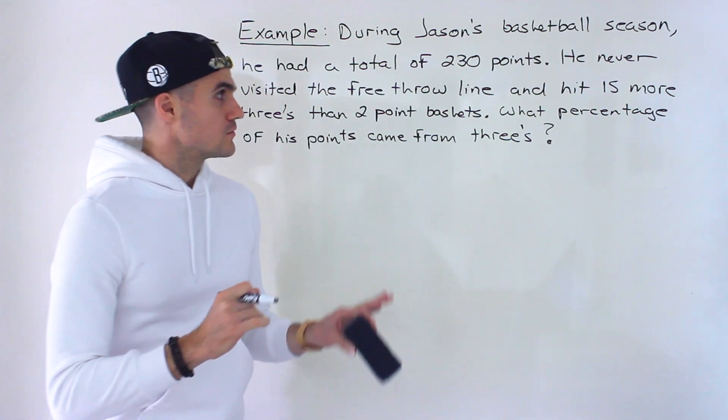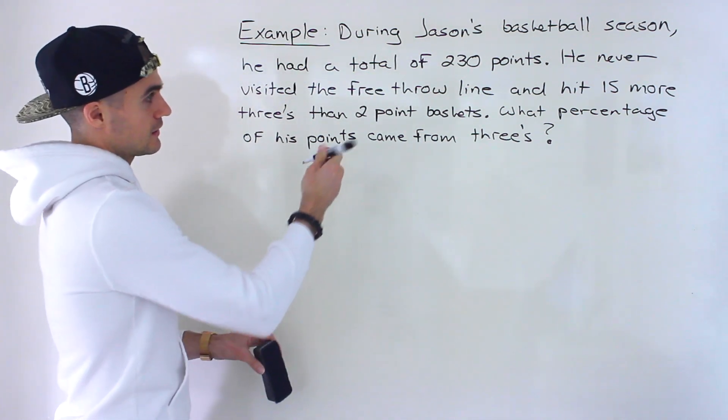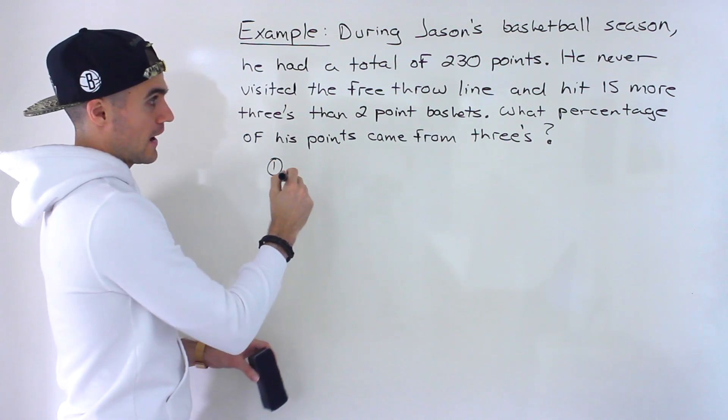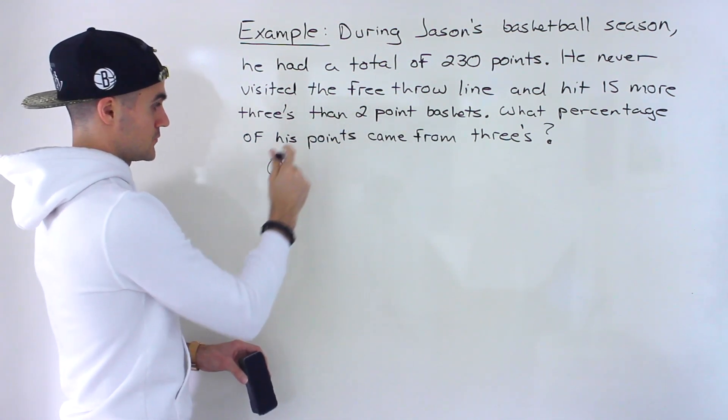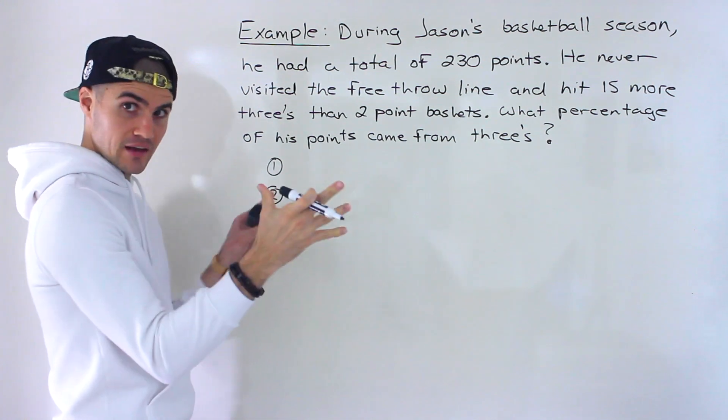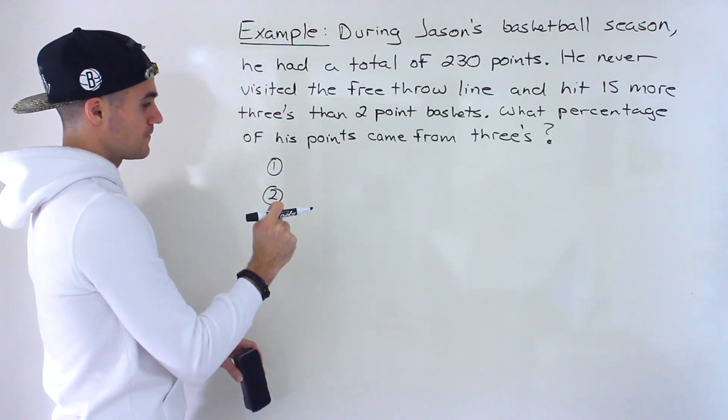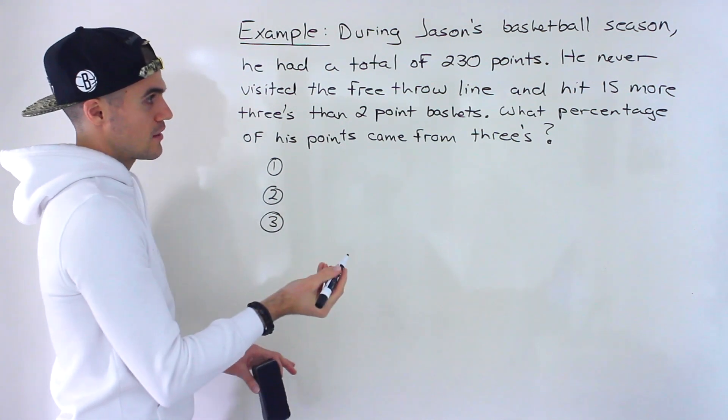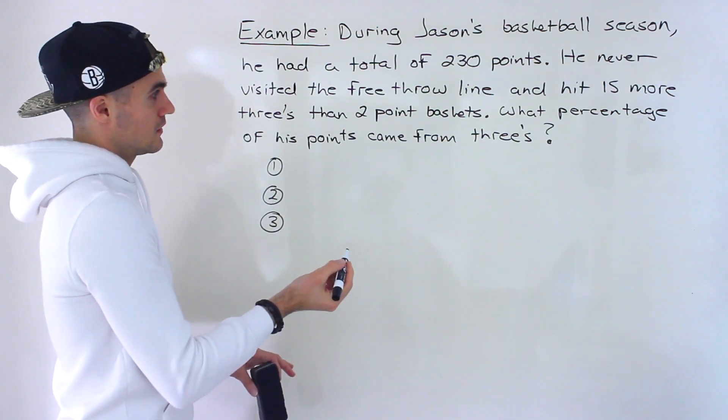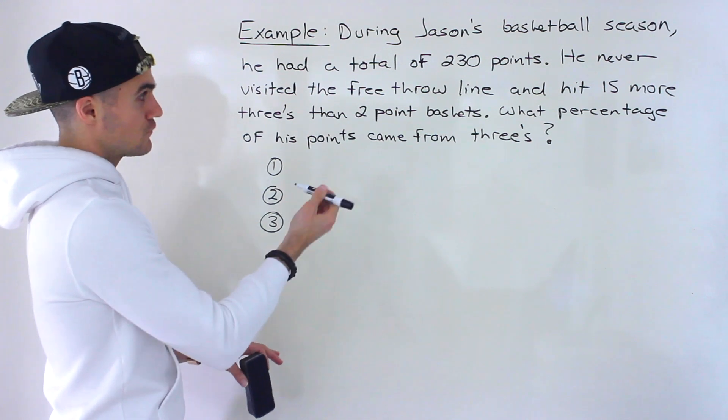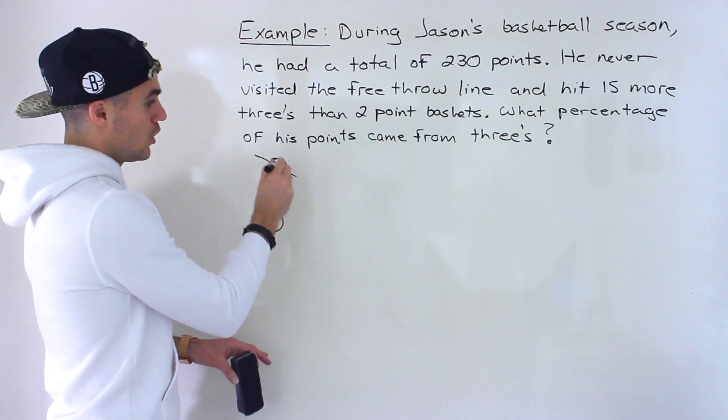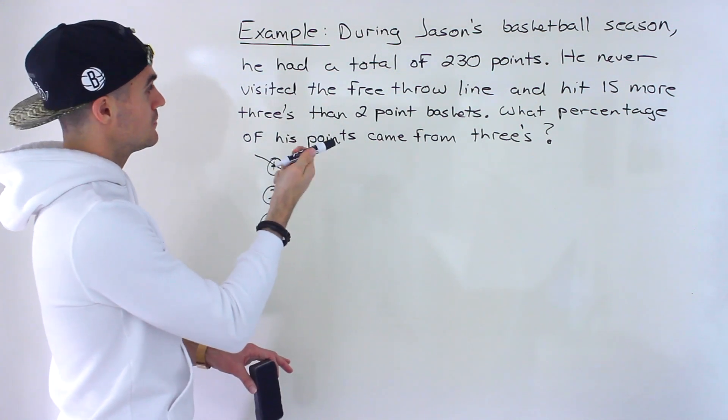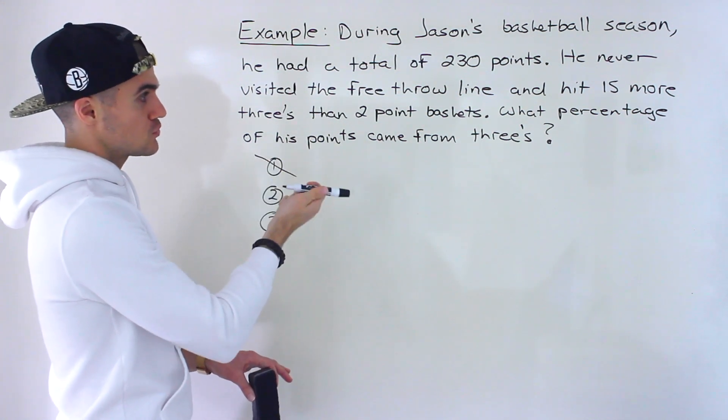Okay, so if you're not familiar with basketball, basically a free throw shot gives you one point, and then you have regular two-point baskets that are within the three-point line, and anything outside of the three-point line counts as three points. So we're told that he never visited the free throw line, so there were no one-point baskets that he had all season. And we're told that he hit 15 more threes than two-point baskets.